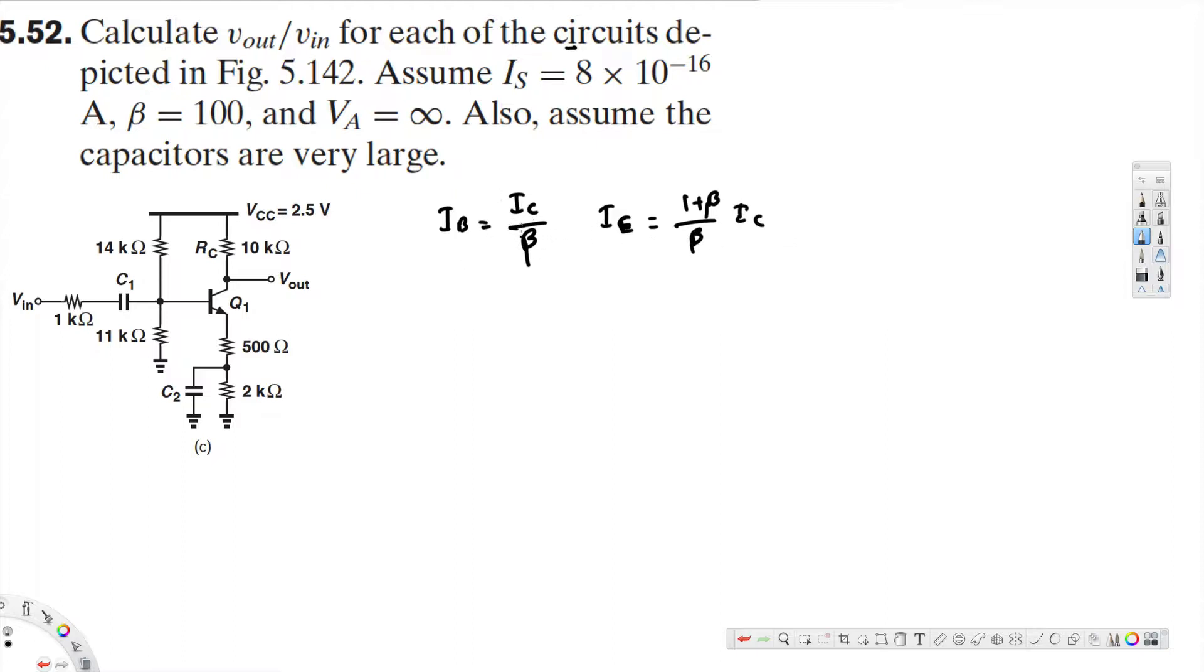Now here we have to find out I_C because our purpose is to find out the transconductance. Because the question is asking for the gain, to find the gain we have to find out the transconductance. To find the transconductance we had to solve for I_C. That's why we had to bring everything in terms of I_C and solve them. And I_C is equal to beta times I_B.